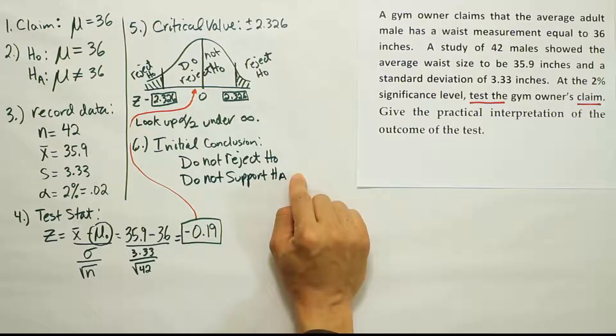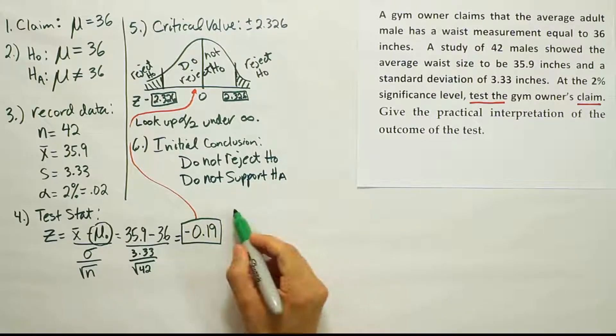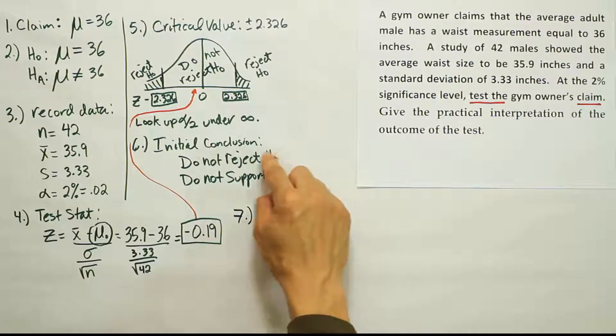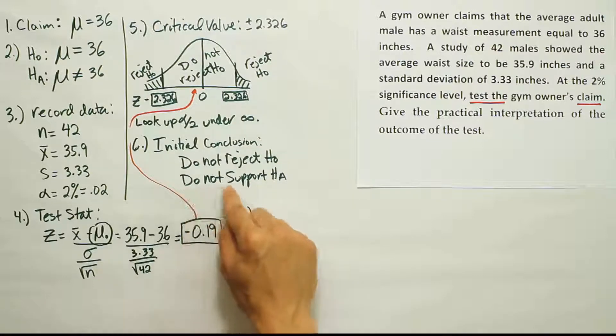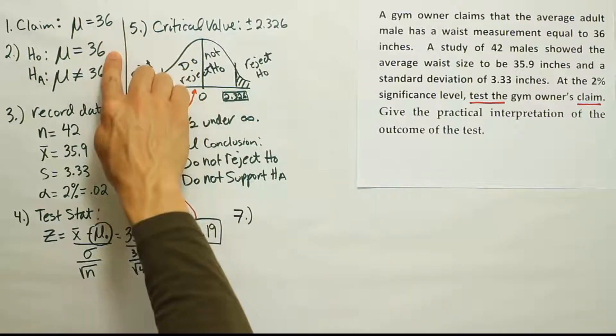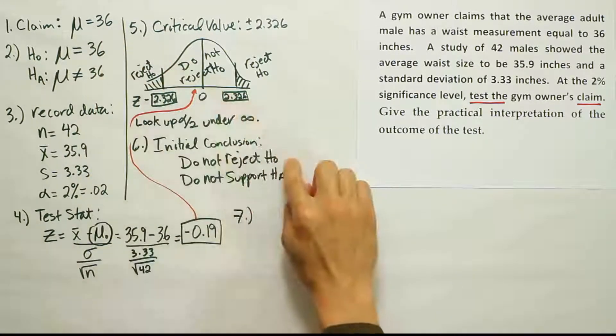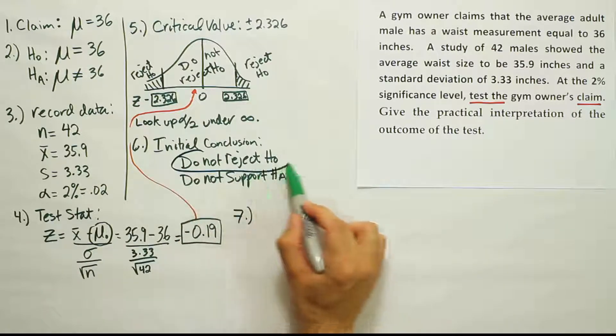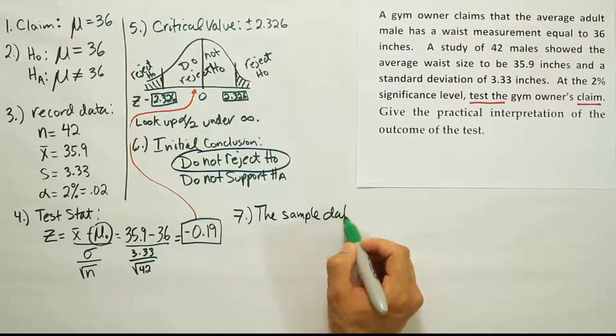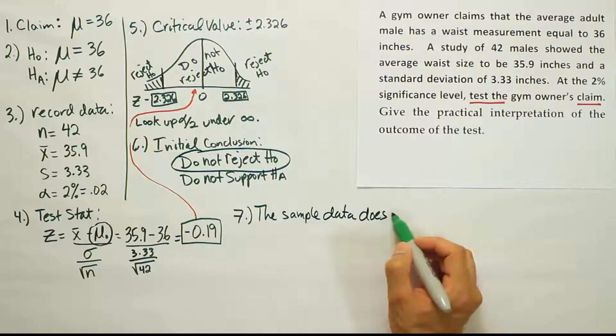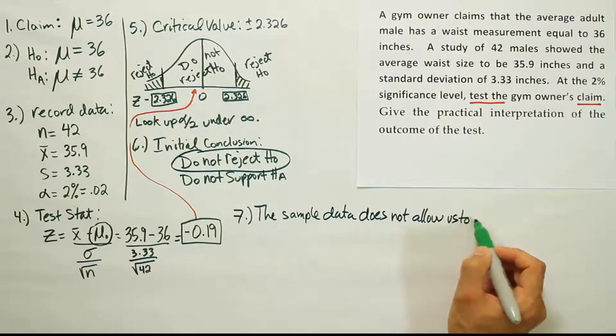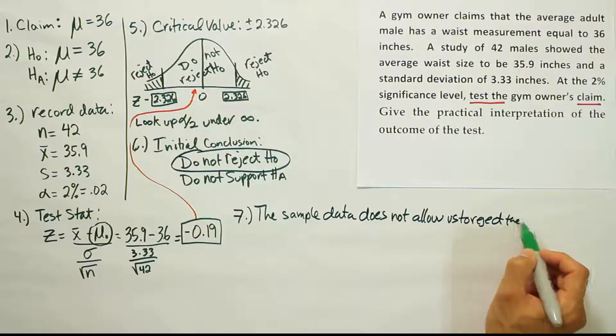All right, now, what we're going to have to ask ourselves is, to get our final step, the last step of the problem, the final conclusion, we have to ask ourselves, which wording are we going to use? Are we going to say that we do not reject the claim, or we're going to say we do not support the claim? That all depends on which one our claim is. Is it H0 or HA? Looking back here, we saw that our claim was the same as H0, so this time we're going to use the wording, do not reject the claim, right? So we're going to say the sample data does not allow us to reject the claim.